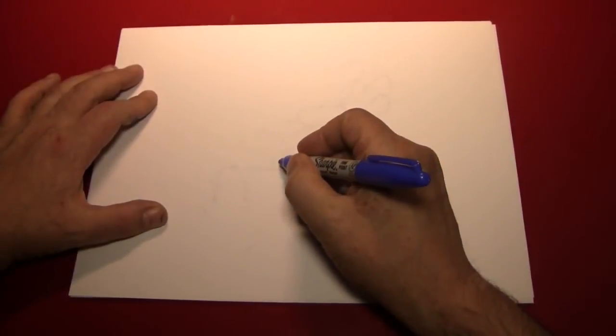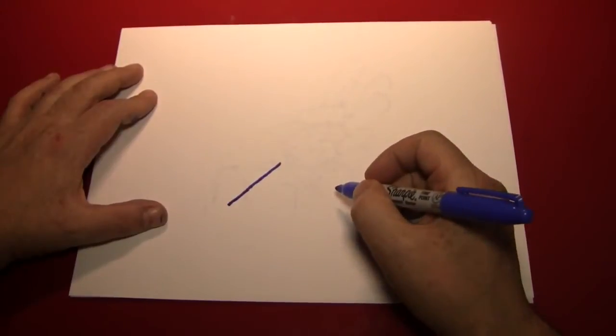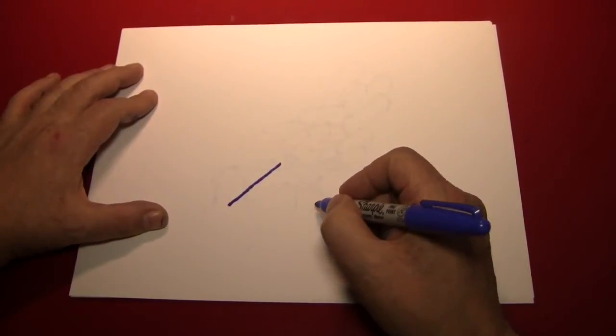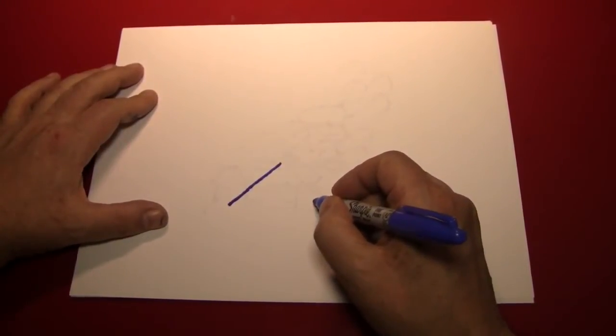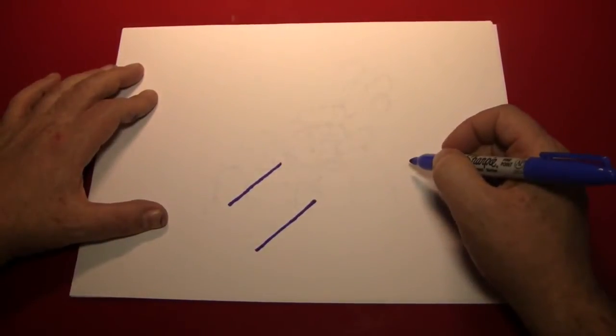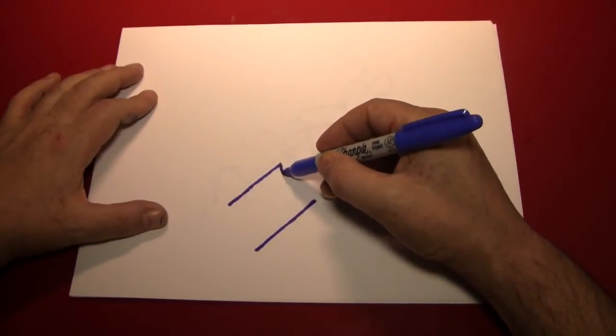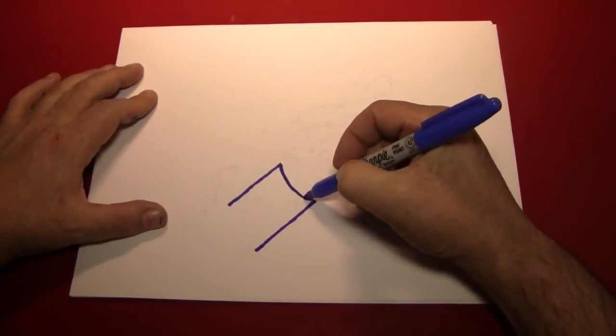I like to get started drawing a hand by drawing the sleeve of the shirt that the hand is coming out of. We'll start by making a diagonal line there, and then another one a little bit below like that. Connect this end with a very slightly curved line like this.